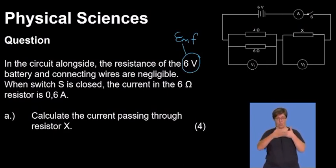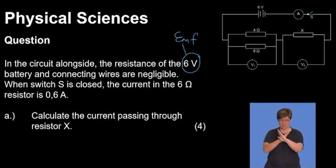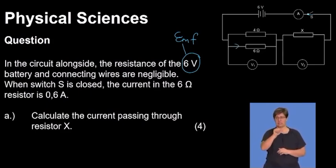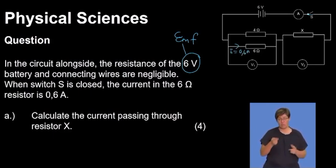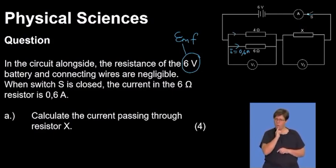There is our switch S. If the switch S is closed, we are told that the current in the six ohm resistor is 0.6 amps. So the current that goes to this resistor is 0.6 amps. So is that the total current? Definitely not, because part of the total current goes to the four ohms. And immediately we are thinking: four ohms is lesser than the six ohms.